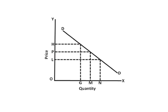As we can see in this graph, when the quantity demanded is OG, our price is OH. When price goes down from OS to OP, our quantity demanded in the market has been increased to OM. And when price has gone to OL, our quantity demanded has gone to ON. This shows that the demand curve is downward sloping.